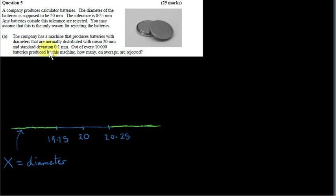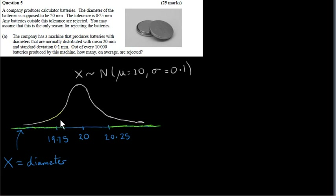The company has a machine that produces batteries with diameters that are normally distributed with mean 20 mm and standard deviation 0.1 mm. Here we have a graph of a normal distribution centered at X equals 20. The normal distribution is symmetrical about X equals 20. We can write this as: X follows a normal distribution with mean mu equals 20 and standard deviation sigma equals 0.1.